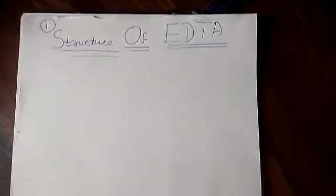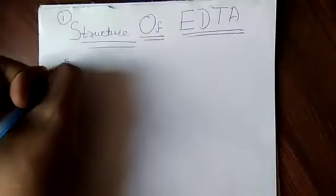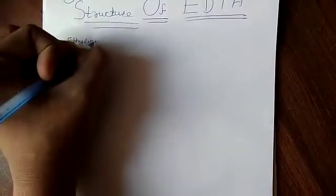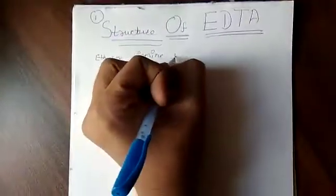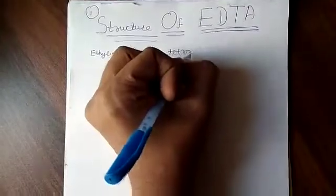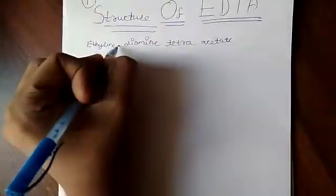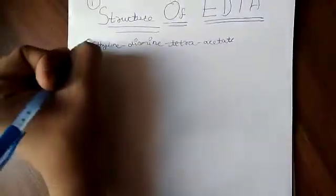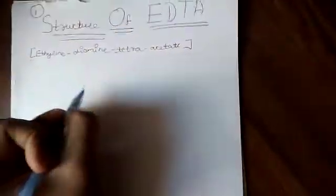Let's begin with the structure of EDTA. First of all, the full form of EDTA is ethylene diamine tetra acetate. See, this is the full form of EDTA. Now let's begin with the structure.